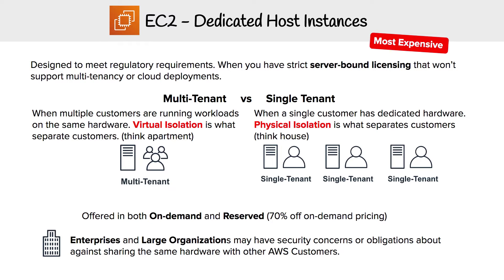To really understand dedicated hosts, we need to understand multi-tenant versus single-tenant. Whenever you launch an EC2 instance using on-demand or any of the other types besides dedicated hosts, it's multi-tenant, meaning you are sharing the same hardware as other AWS customers. The only separation between you and other customers is through virtualized isolation, which is software. Then you have single-tenant, where a single customer has dedicated hardware, and customers are separated through physical isolation.